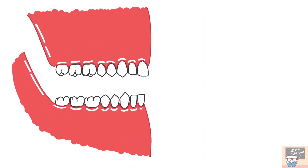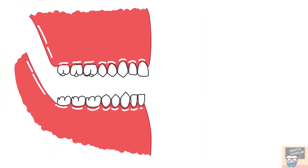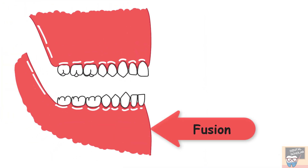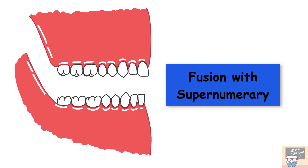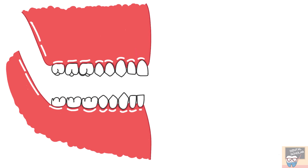Next is location. Double teeth in the mandible are usually 100% due to fusion, whereas in the maxilla they might at times be due to partial gemination. Fusion with a supernumerary tooth is common in both dentitions and is seen with equal frequency in both maxilla and mandible.